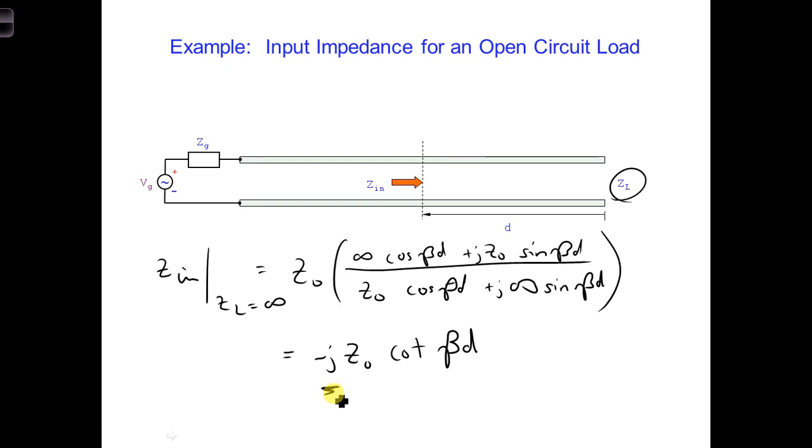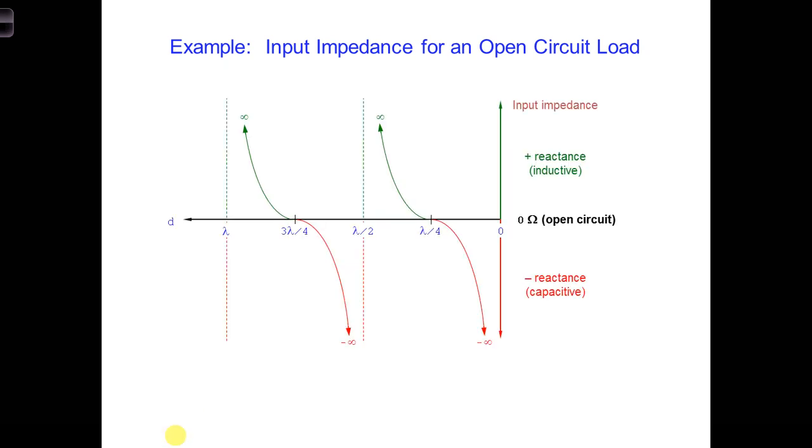Let's plot this input impedance versus distance from the load. Here is the plot. From this figure, it is apparent that as we travel down the transmission line away from the load, the impedance repeats every half wavelength.